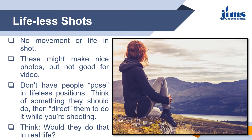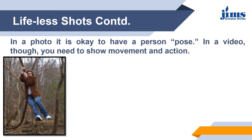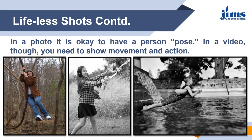The shot must look like there is some motion in the subject or object. In a photo it is okay to have a person pose, but in a video we need to show movement and action. All three example images are showing some action — these are good for still photography as well, and if we make a video of these shots, they will draw the attention of viewers and there will be some life in the shots. So movement and action are a must in a video shoot.